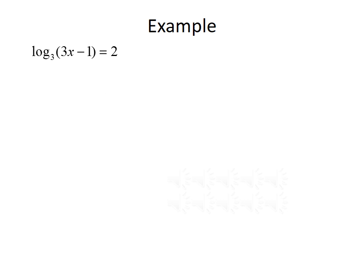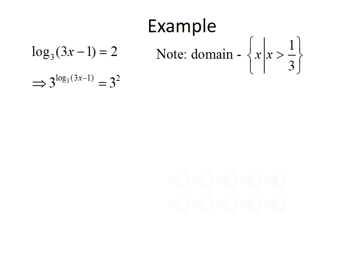Let's start with an example of solving a logarithmic equation. We want to solve log base 3 of (3x minus 1) equals 2. Before we start, note that the domain is the set of x such that x is greater than one-third, since we need what's inside the log to be greater than zero. To solve for x, the first thing we need to do is cancel out the logarithm.